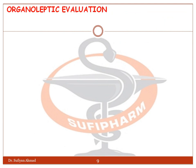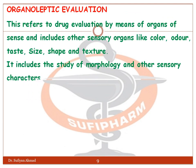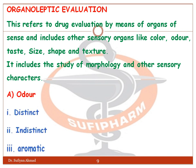Organoleptic evaluation refers to drug evaluation by means of organs of sense, and includes sensory characters like color, odor, taste, size, shape, and texture. It includes the study of morphology and other sensory characters. First is odor: distinct, indistinct, and aromatic.